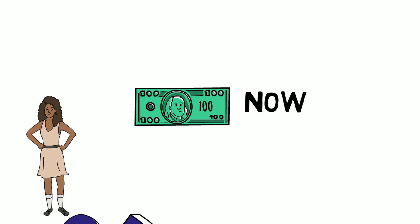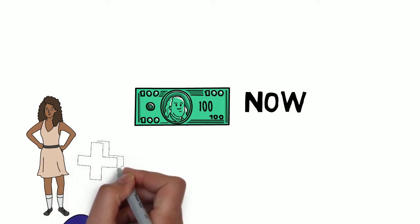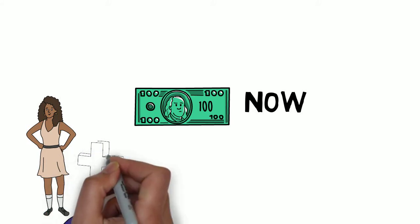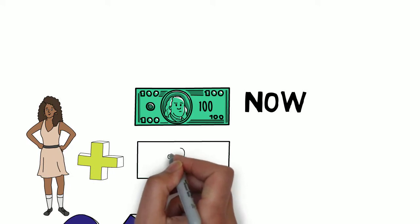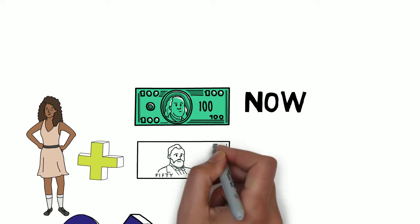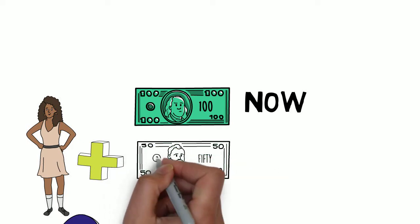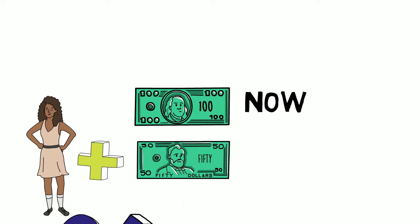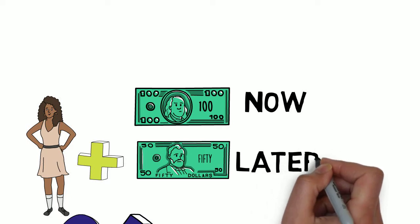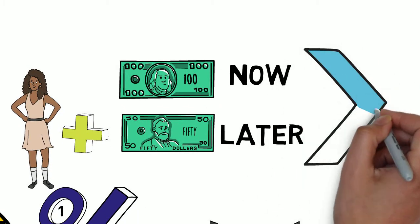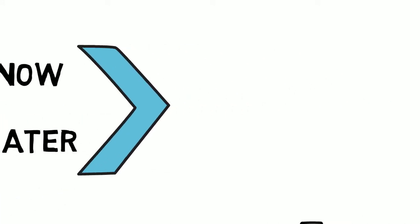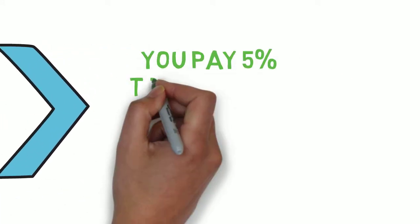Every month, some of your paycheck goes to Social Security and to VRS. But every month, Rockingham County is actually chipping in a huge additional portion towards your VRS retirement. Effective July 1, 2012, the General Assembly mandated that all school employees pay 5% VRS member contributions towards their retirement. That's what you pay. The member contribution is 5% of your reportable salary to VRS.